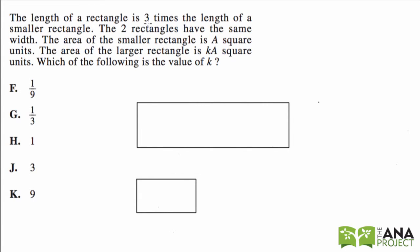The length of a rectangle, this rectangle, is three times the length. So let's just say that this is nine. The length of a smaller rectangle, so three. This larger rectangle, the length of nine, has three times the length of this smaller rectangle.